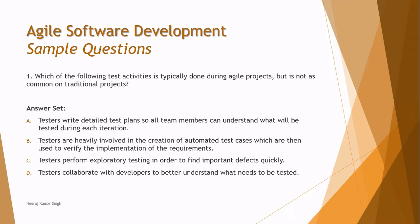Option C: testers perform exploratory testing in order to find important defects quickly — that's common for both agile and traditional projects. Option D: testers collaborate with developers to understand what needs to be tested — that is also common in traditional projects. So the right answer is B, as per the syllabus.